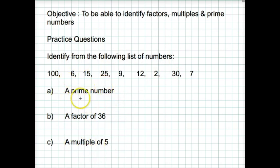Well, a prime number is a number that can only be divided by itself and 1. It can't be 100, that can be divided by lots of numbers - 10, 50, etc. It can't be 6 because that can be divided by 2 and 3. It can't be 15, that's divided by 5. 25 also is divided by 5. 9 is divided by 3. 12 can be divided by 2, 3, 4, 6.